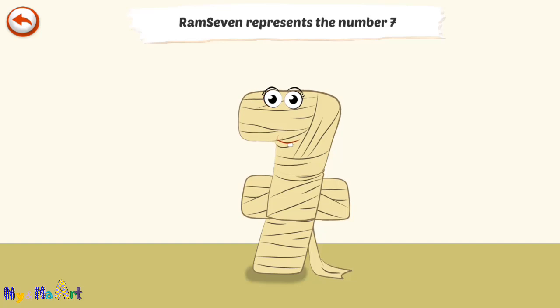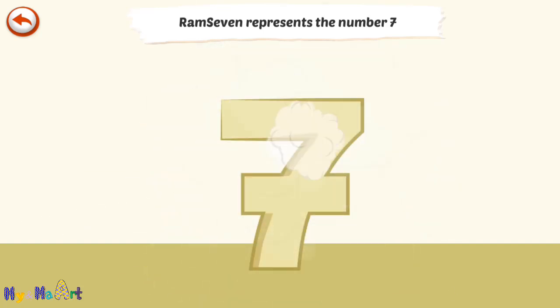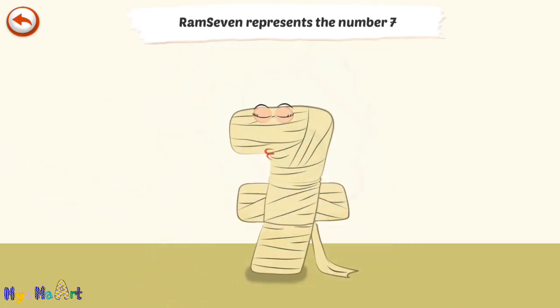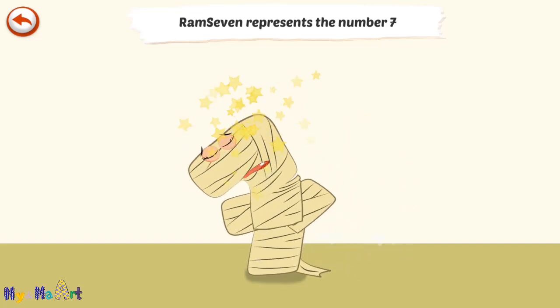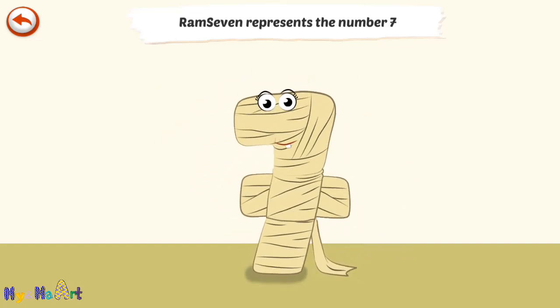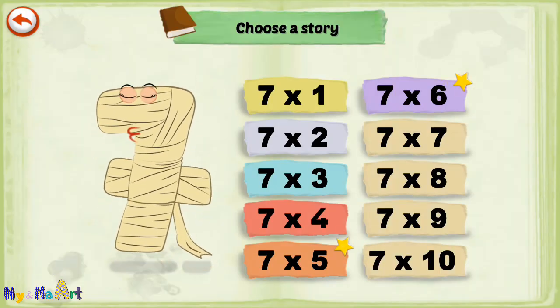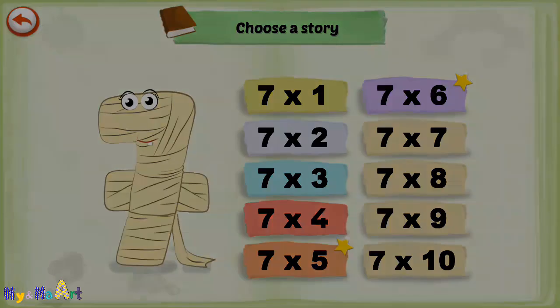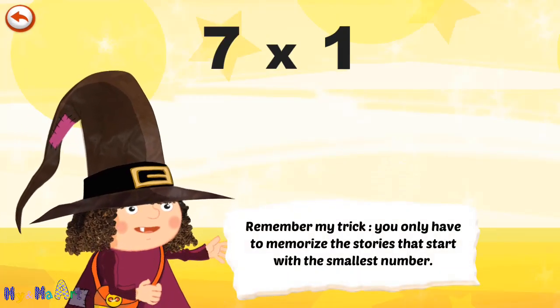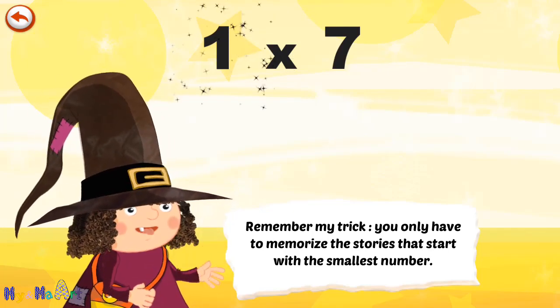Ram seven represents the number seven. Ram seven is a mummy who is so old she has been wearing the same bandages for centuries. Remember my trick: you only have to memorize the stories that start with the smallest number.